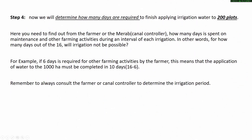Step 4: Determine how many days are required to finish applying irrigation water to 200 plots. Find out from the farmer or canal controller how many days are spent on maintenance and other farming activities during each irrigation interval. In other words, for how many days out of the 16 will irrigation not be possible. For example, if 6 days are required for other farming activities, then irrigation of the 1,000 hectares must be completed in 10 days. Always consult the farmer or canal controller to determine the irrigation period.